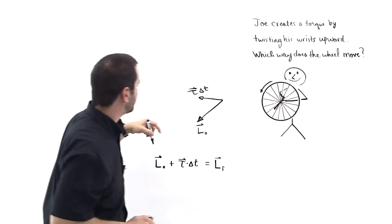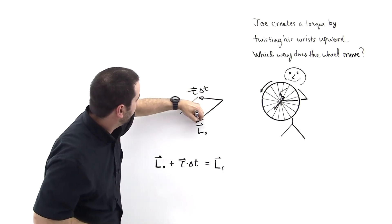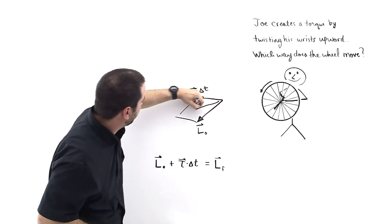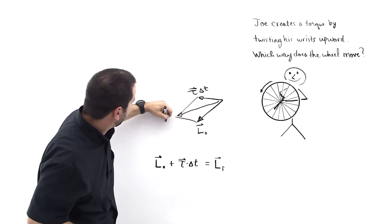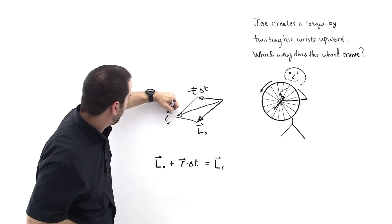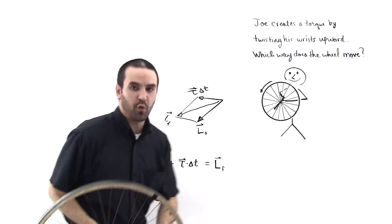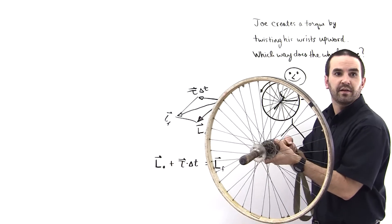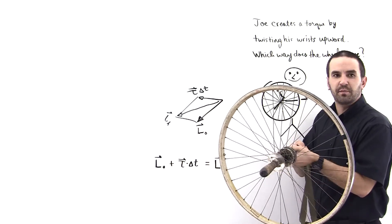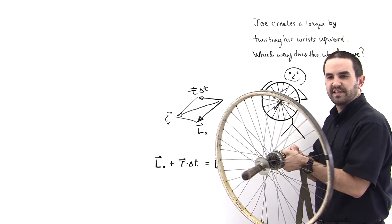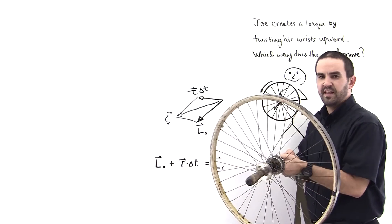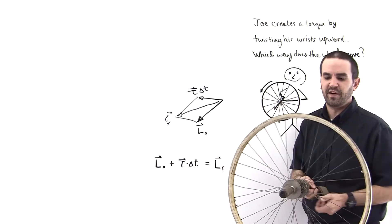Okay, so then we just add these two vectorially and we see that we'll get something like this. So this will be L final. So initially the plane is pointing like this, but then in the final situation it moves over to the right. That seems sort of strange, doesn't it? And so let's do the experiment to verify it.